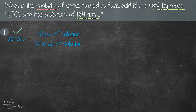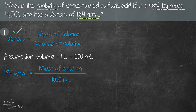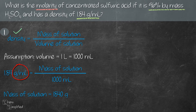Starting with the density formula, let's make an assumption for the volume of the solution. To simplify, let's assume we have one liter of solution, which is equivalent to 1000 ml. You can start with any volume and it will not affect the final answer as long as you use the same volume in the fourth equation. Plugging in 1.84 grams per ml for density and 1000 ml for volume, that gives us the mass of the solution as 1840 grams. Be careful to use ml for volume since the unit for density is grams per ml.